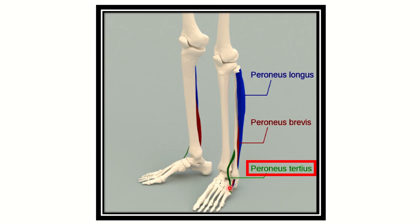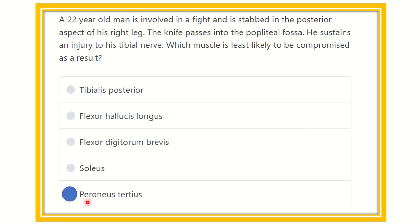Here we can see peroneus tertius. Peroneus tertius is an anterior compartment muscle. Peroneus longus and peroneus brevis are lateral compartment muscles. Peroneus longus, peroneus brevis, and peroneus tertius are not in the posterior compartment — they are located in the anterior and lateral compartments. Therefore, our final answer is peroneus tertius, which will not be affected when the tibial nerve is damaged, because the tibial nerve supplies only the posterior compartment muscles, not the anterior compartment.